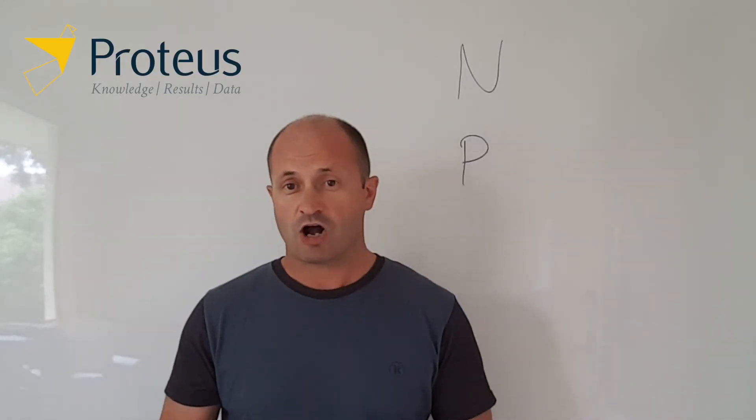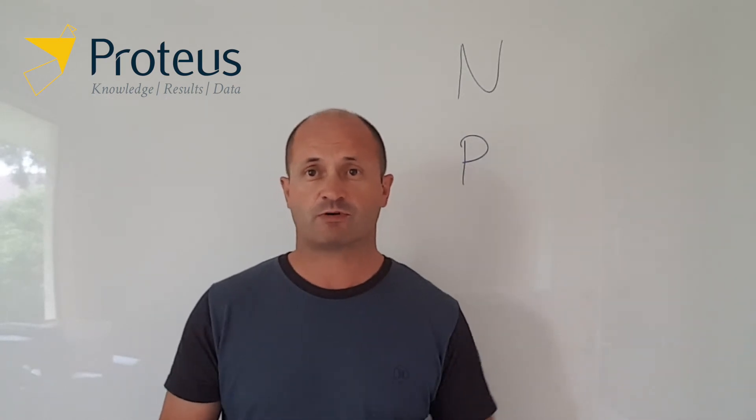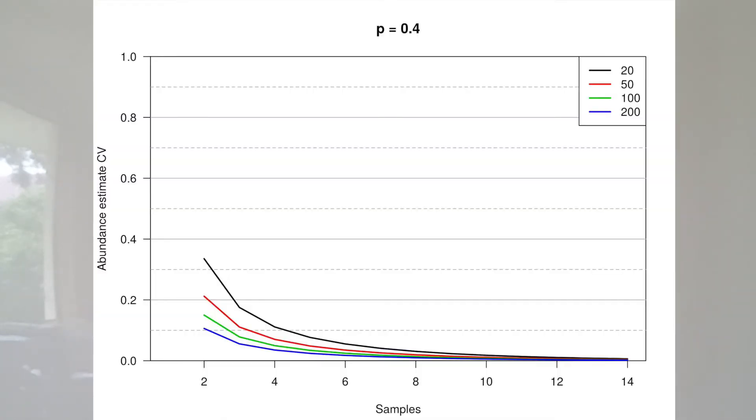Now what happens if we have a higher capture probability, for example if it's 0.4 as in this graph here now? Well again to achieve that CV of 0.1, firstly note that all of those lines are a lot smaller. Overall our level of precision is a lot better than when the detection probability is lower. This time if we have 200 animals then we only need about two surveys to achieve that, whereas if we have 20 animals we still need about perhaps four surveys.